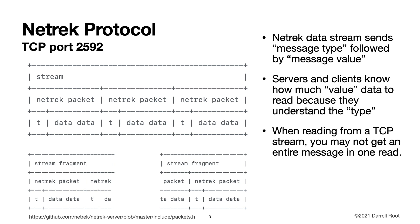For now, let's talk about the TCP version of the Nettrek protocol. Nettrek runs over TCP port 2592. So you have a stream of bytes, and the stream of bytes is encoded into Nettrek packets — a Nettrek packet followed by a Nettrek packet followed by a Nettrek packet. Each Nettrek packet has a type and then it has data.